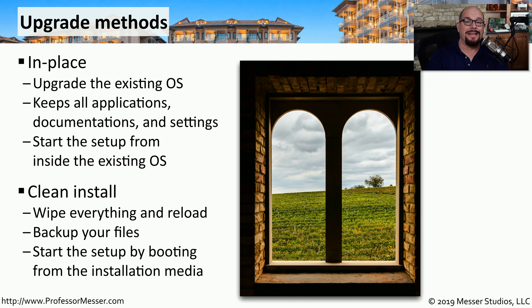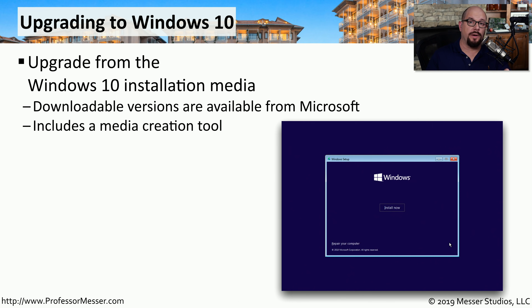With a clean install, you're deleting everything that's on that partition and reinstalling Windows from a brand new configuration. To start a clean installation, you would install your USB drive or DVD-ROM with your installation media, and then boot the system using that media. If you purchased an upgrade to Windows 10, you can download that version directly from Microsoft. Microsoft includes a media creation tool that will install the Windows 10 upgrade onto your USB drive.